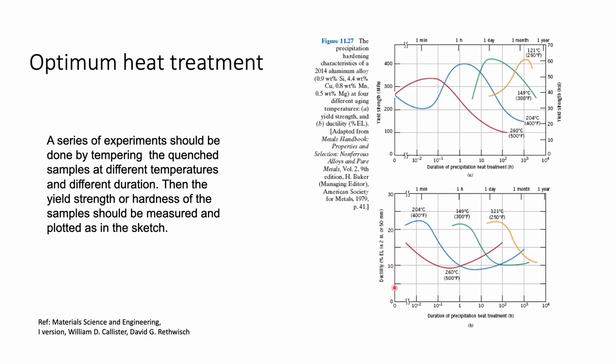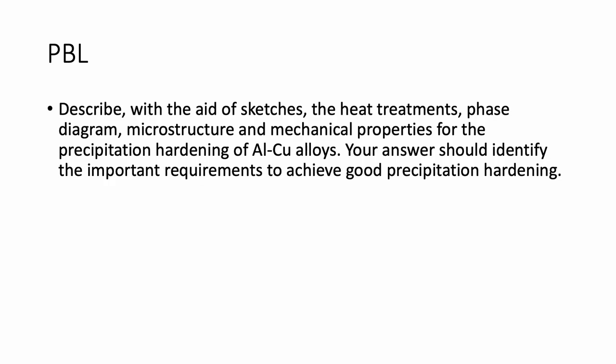The PBL question asks you to use the aluminum-copper phase diagram and think about the necessary heat treatment details to control the microstructure for better mechanical properties. You also need to discuss the processing parameters and the link to structural changes. And that's all for today.